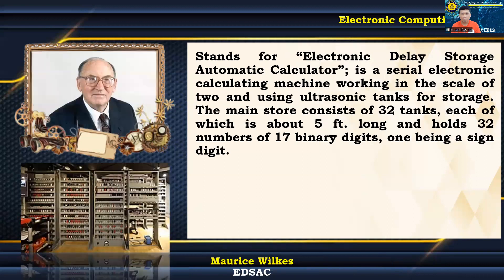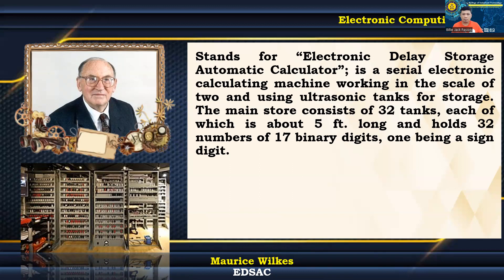EDSAC stands for Electronic Delay Storage Automatic Calculator. It is a serial electronic calculating machine working in the scale of 2 and using ultrasonic tanks for storage. The main store consists of 32 tanks, each about 5 feet long, holding 32 numbers of 17 binary digits — one being a sign digit. Cambridge's EDSAC used mercury delay line memory. Originally designed for radar displays, delay lines provided memory for many first-generation computers. EDSAC's 32 mercury tanks could each hold 32 18-bit words.